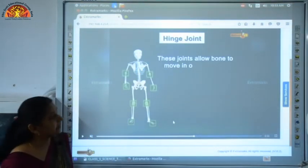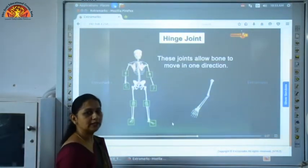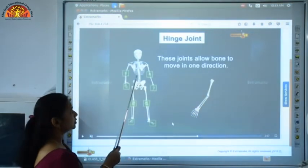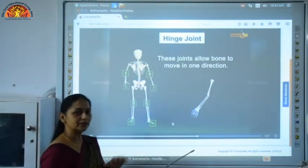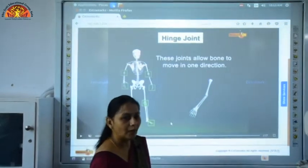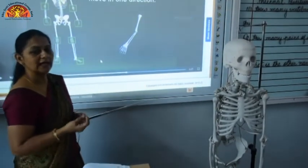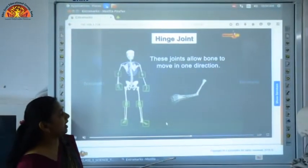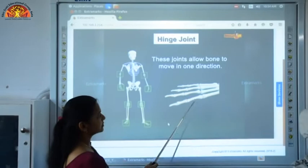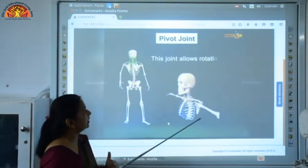Second is hinge joint. These joints allow movement in one direction only — like the hinges of a door, they allow only forward and backward movement. Hinge joint is present in the elbows, knees, fingers, and ankles. As you can see, I can move my hand up and down only. These fingers bend in only one direction: forward and backward.